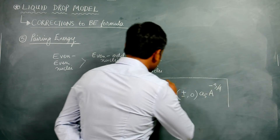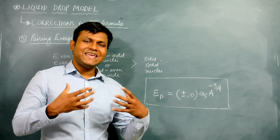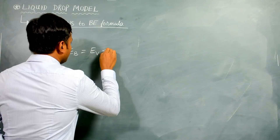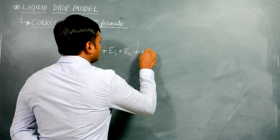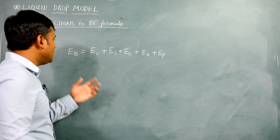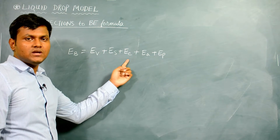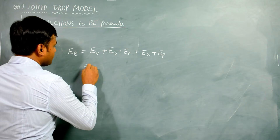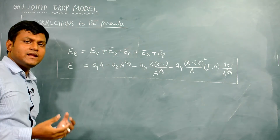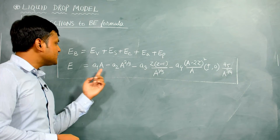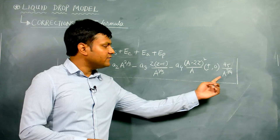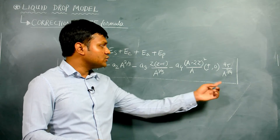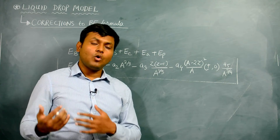By adding the asymmetry energy and the pairing energy, we obtain the final expression for the binding energy of the given nucleus. From the original liquid drop model, the binding energy had contributions from the volume energy, the surface energy, and the Coulombic energy. Now by making certain corrections, we also have additions from asymmetry energy and pairing energy. This final expression is the semi-empirical binding energy formula. The first three terms come from the liquid drop model, and the fourth and fifth terms come from experimental observations that nuclei tend to have equal numbers of protons and neutrons and that even–even nuclei are much more stable.